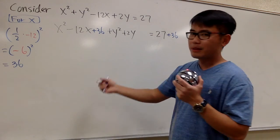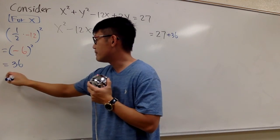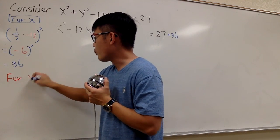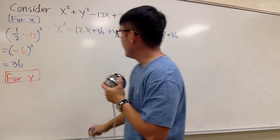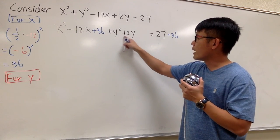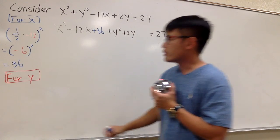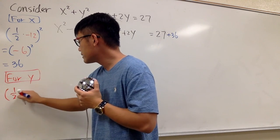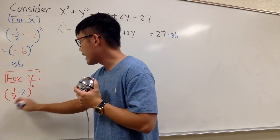And then we are going to do the same thing for y. So let's find that special someone for y. The b value here is the number in front of y, which is positive 2. So let's write that down. 1 half times 2, and then we square that.